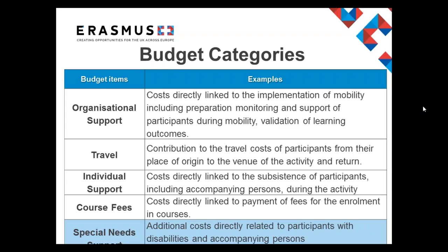For each person that travels abroad, your organisation is eligible to claim the following funds. You can claim organisational support — this is to support the overall implementation of the project and the preparation of people before they go, as well as the validation of learning outcomes. You can also request a travel grant to help contribute to the travel costs for that person to travel to their venue of activity and back again.